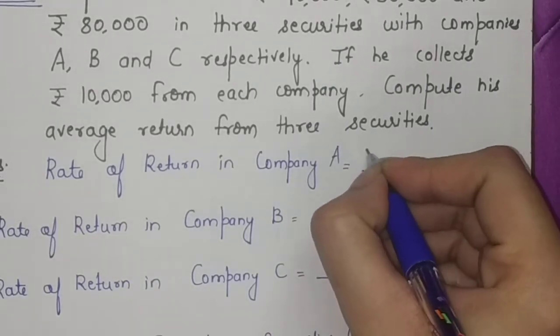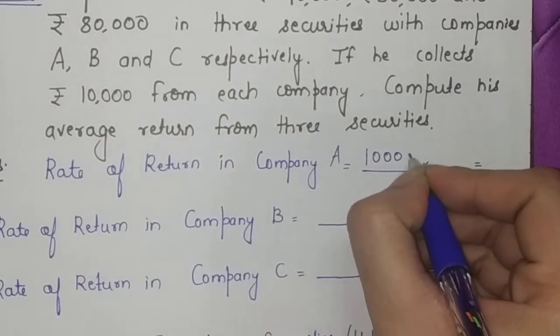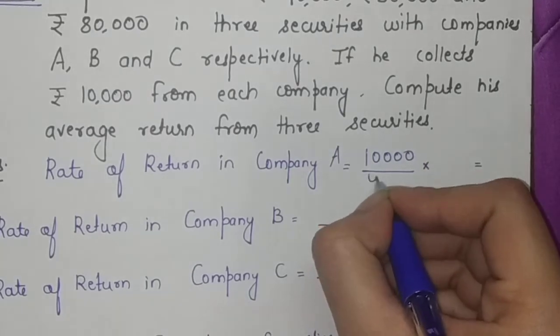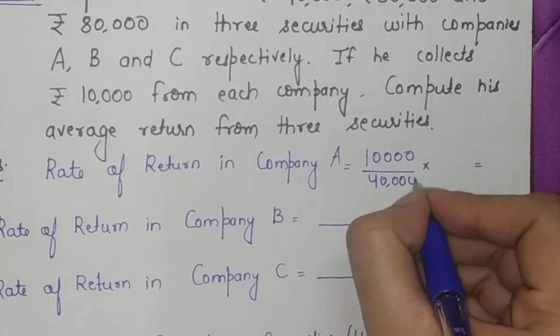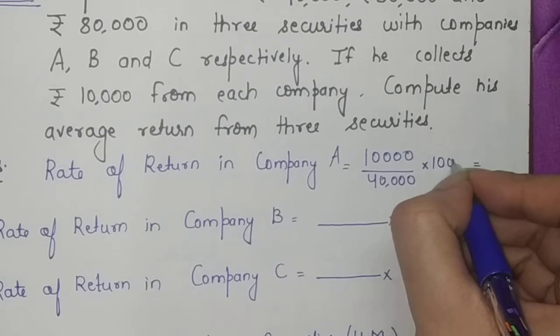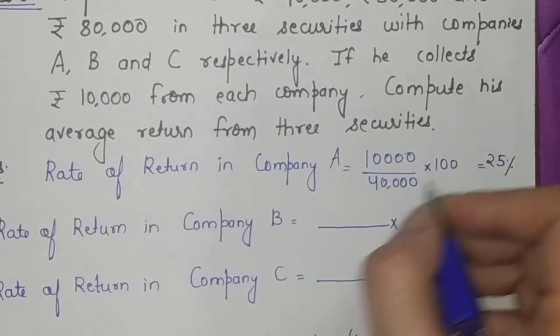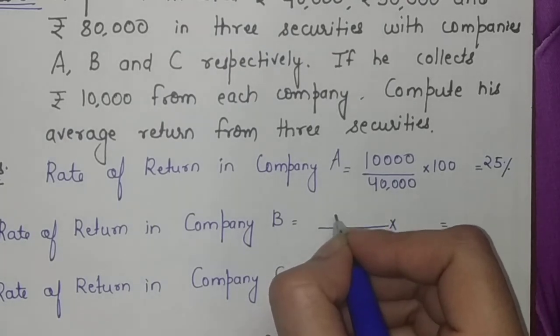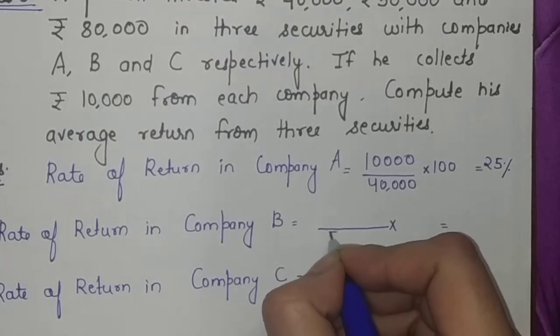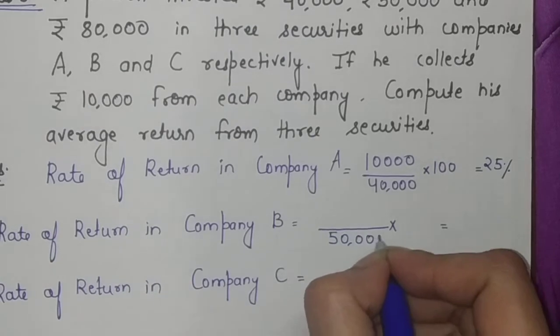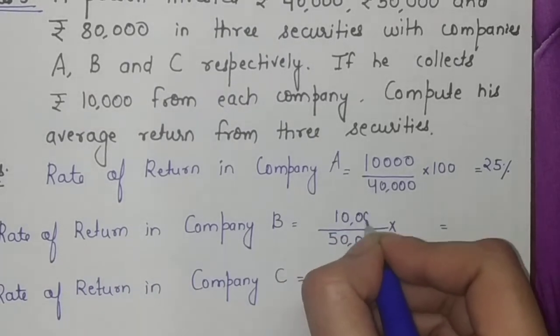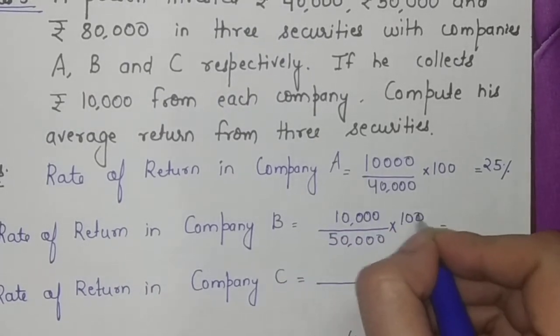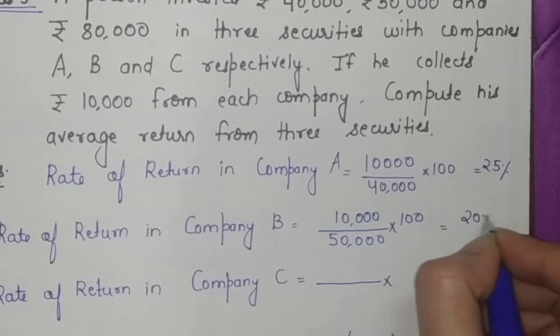From the first company, if he got 10,000 return and he invested 40,000, his rate of return was 25 percent from company A. In the second company he invested 50,000 and the return was again 10,000, so his rate of return was 20 percent for company B.